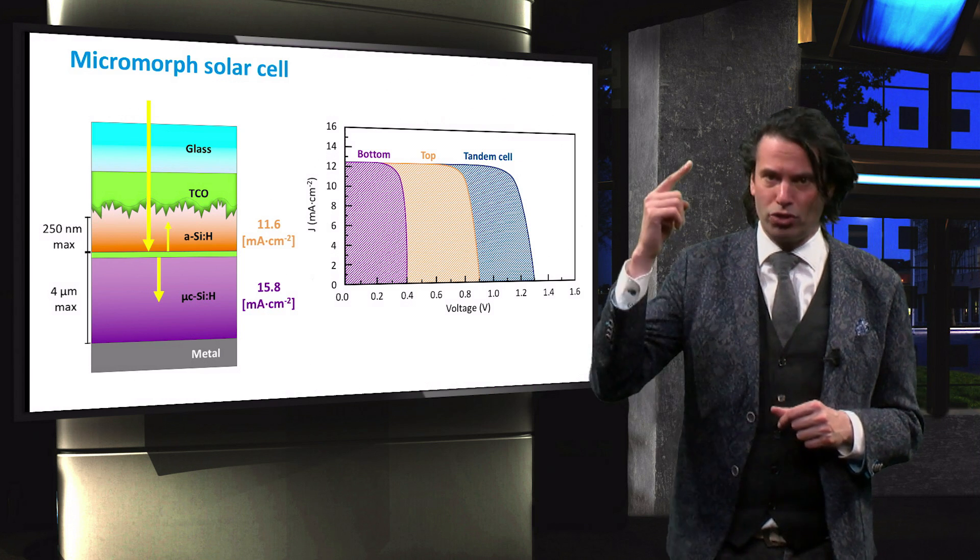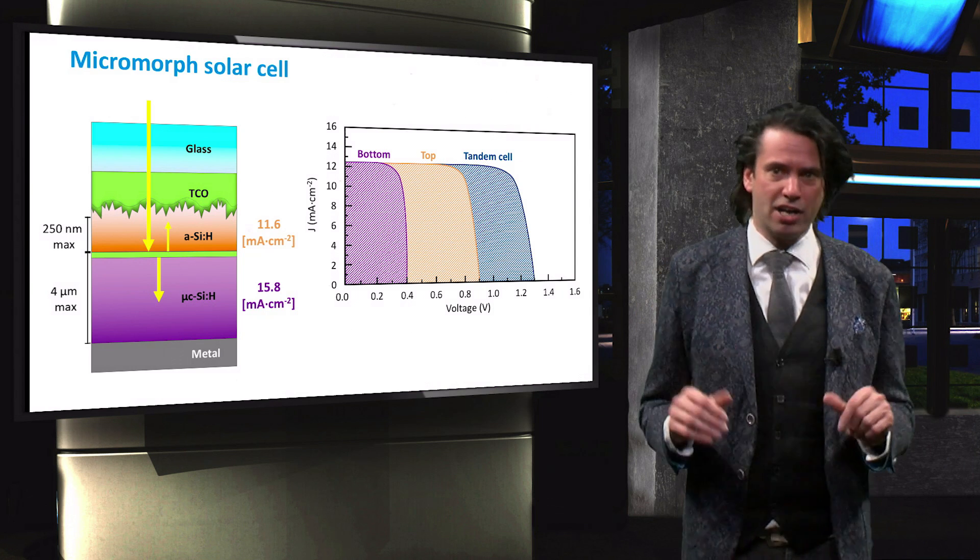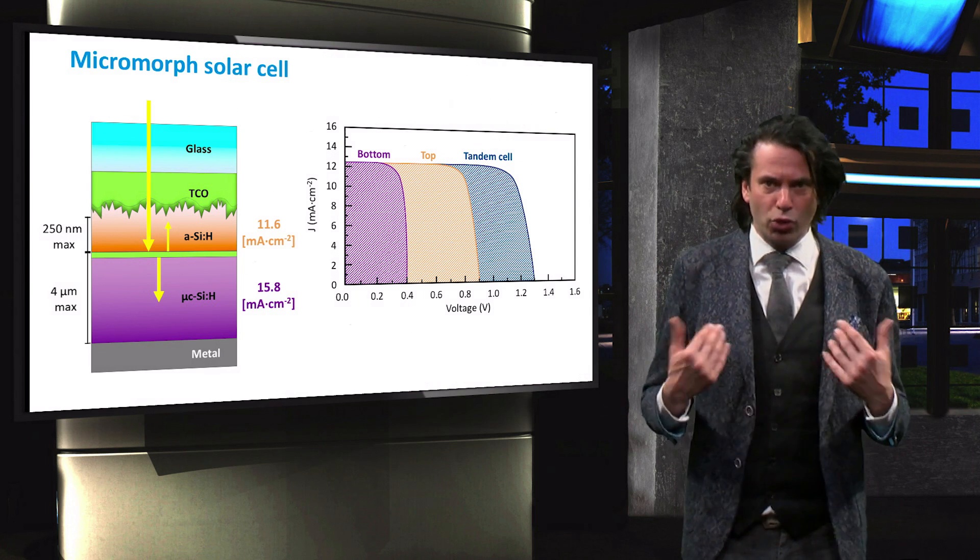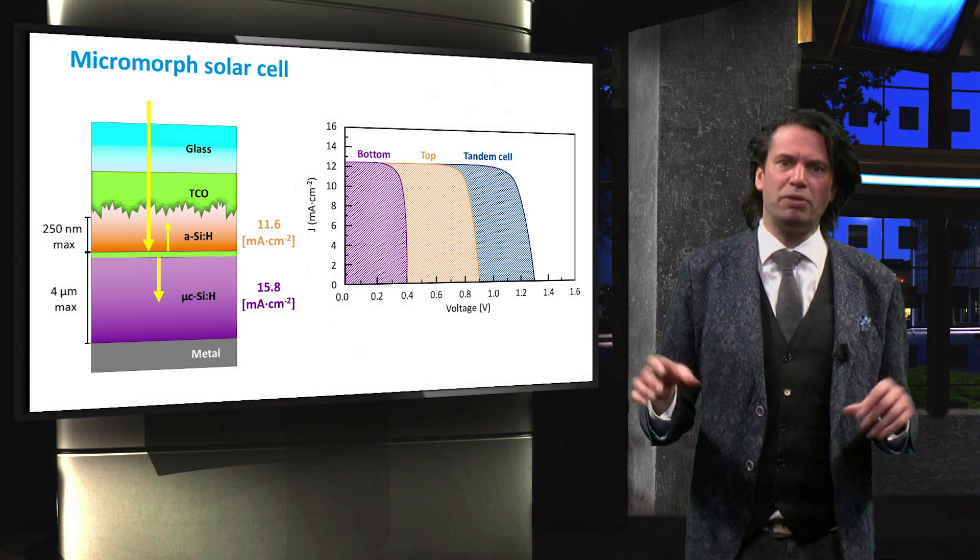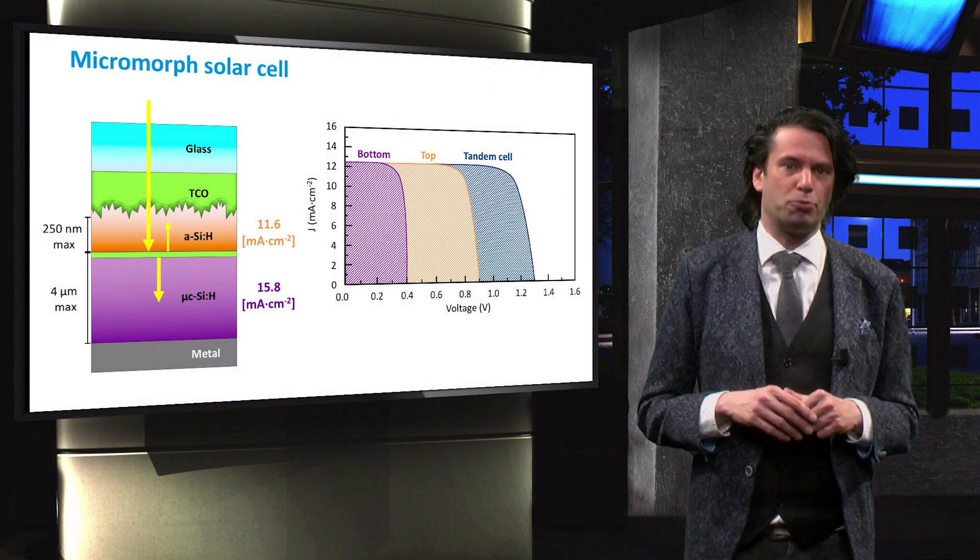An intermediate reflective layer should have high transferred conductivity to allow charge carrier movement through the layer, and should be highly transparent to incident light to minimize parasitic absorption.